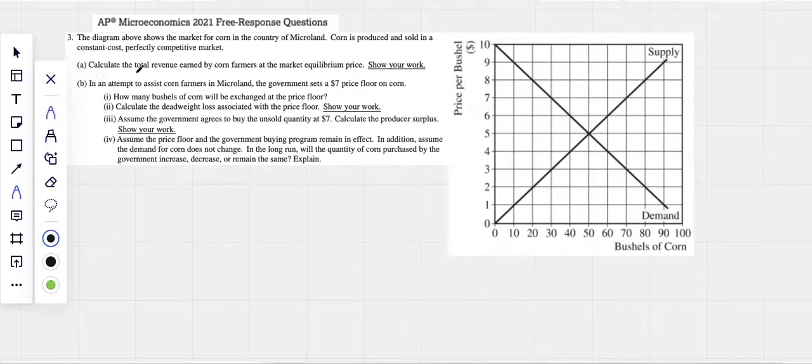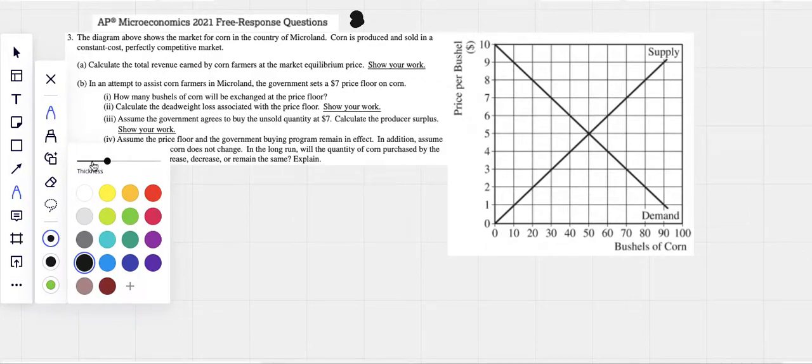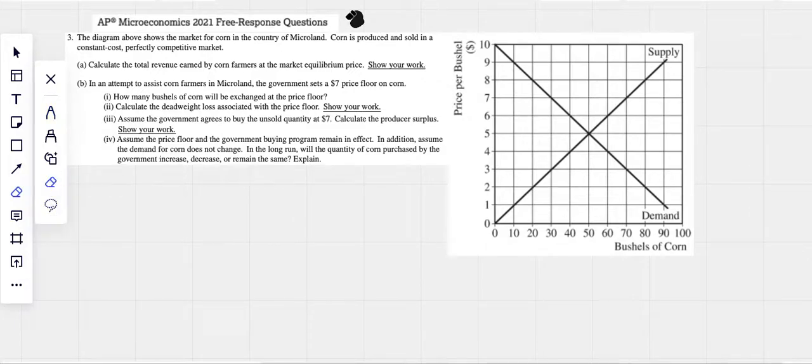Here, let's do 2021. Oops, that's too thick. Let's do 2021 set one. This is set one. Number three, the diagram above shows the market for corn in Microland. Corn is produced and sold in a constant cost, perfectly competitive market.